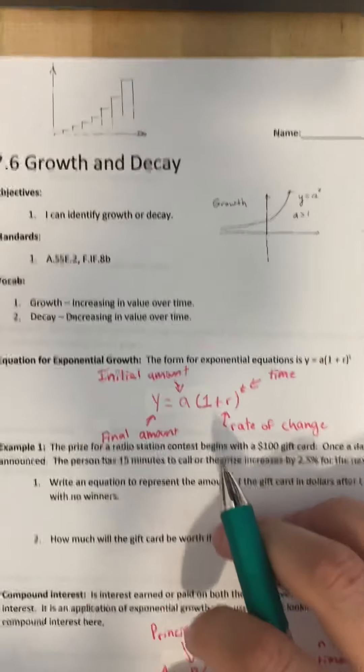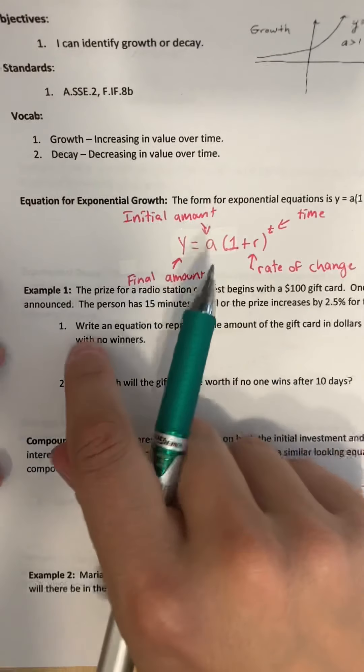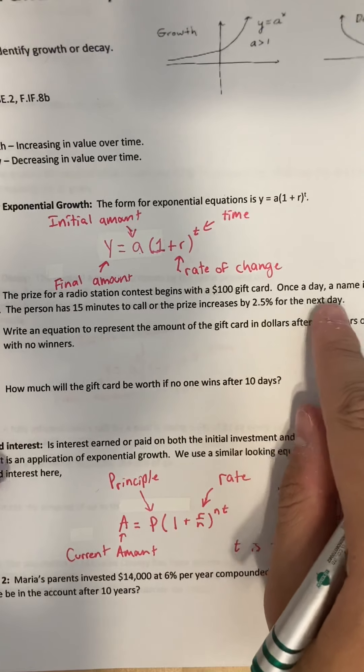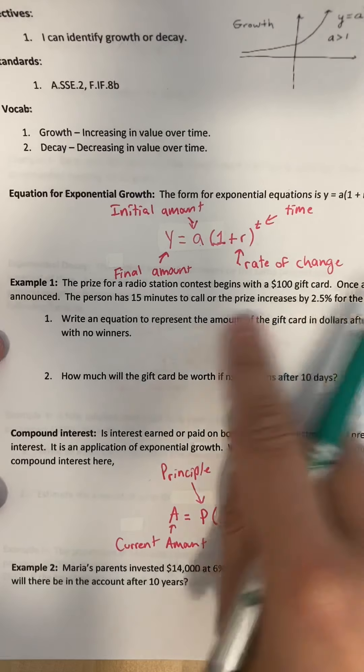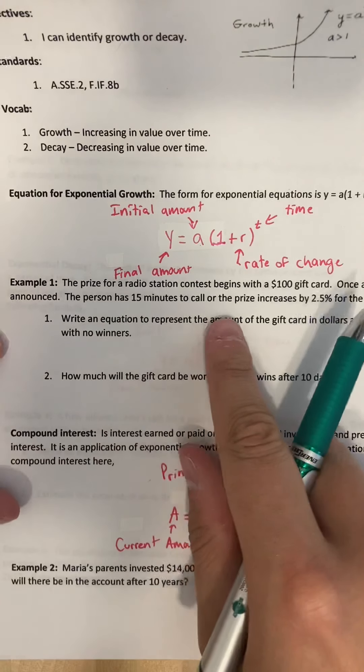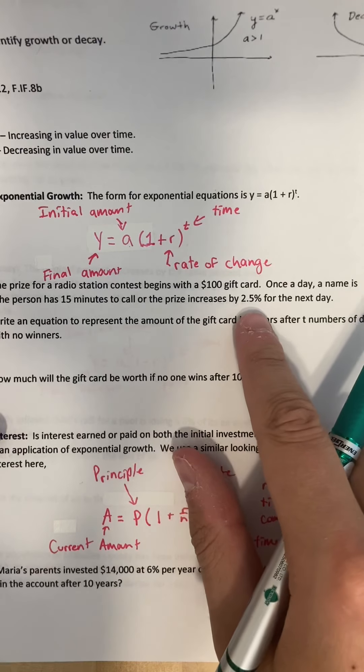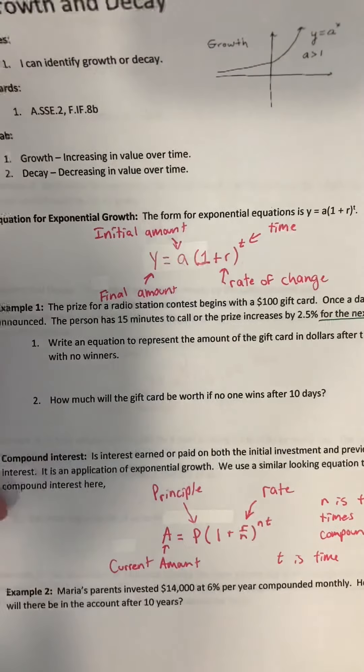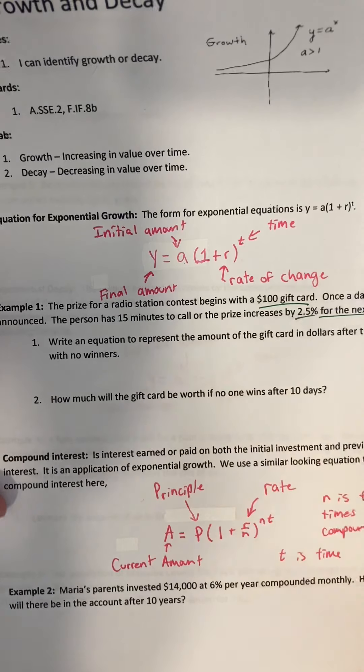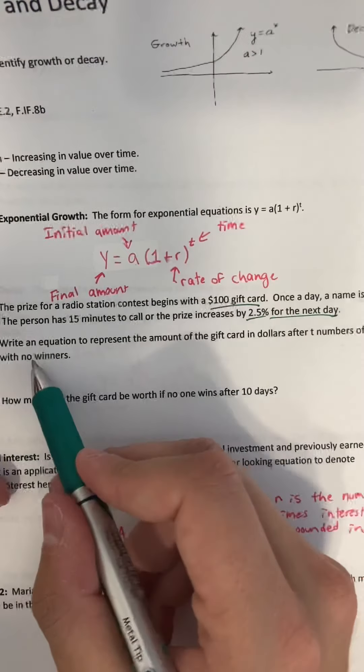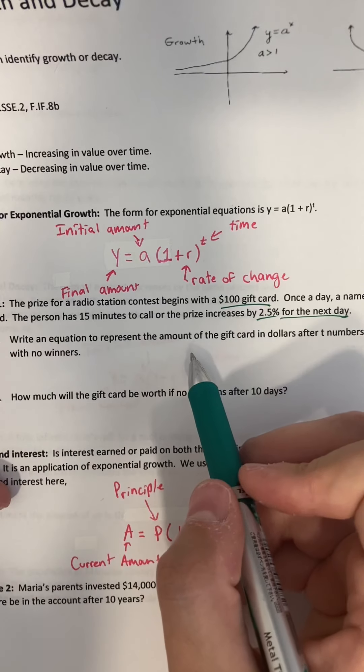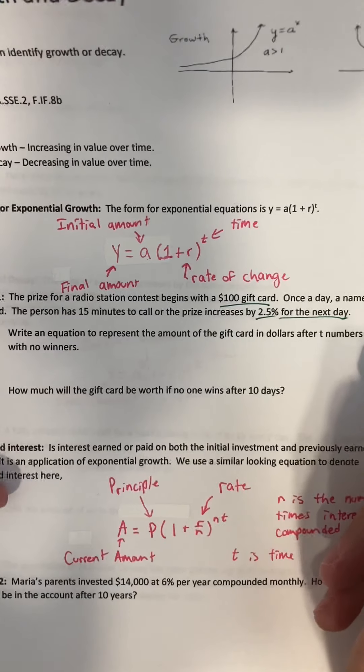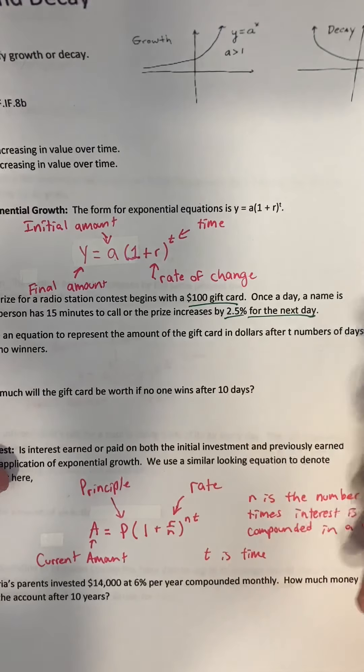Let's take a look at an actual example. Example one: The prize for a radio contest begins with a $100 gift card. Once a day a name is announced. The person has 15 minutes to call or the prize increases by 2.5% for the next day. It says write an equation to represent the amount of the gift card in dollars after t number of days with no winners.